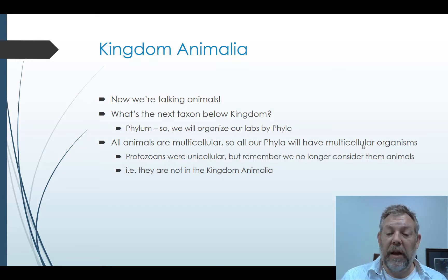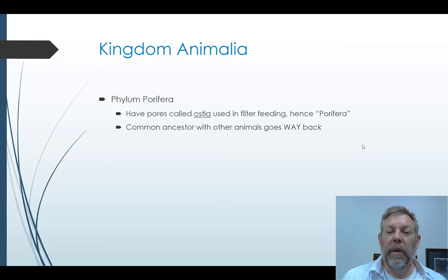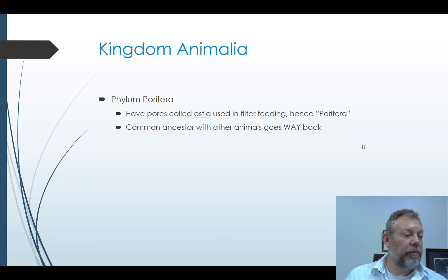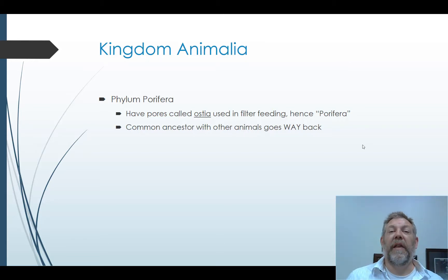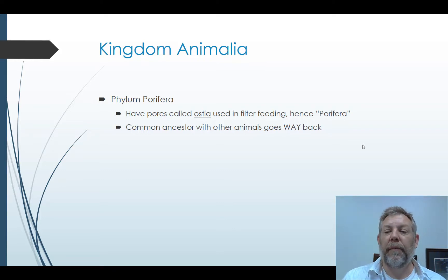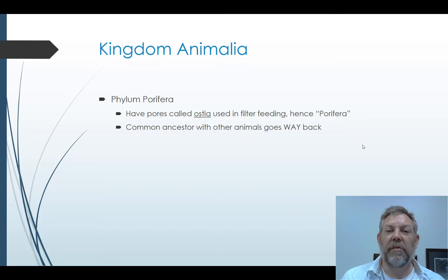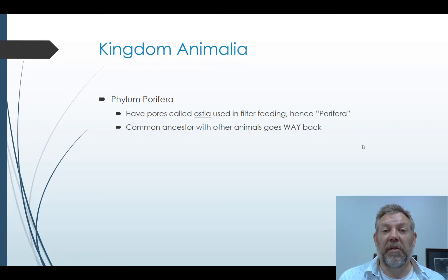Last week's protozoans weren't considered animals. So let's talk about our first phylum, which is the Porifera, or the sponges. These are probably some of the first animals. These are filter feeders, and they have pores called ostia — they suck water in through those pores, and that's where you get the term Porifera. The common ancestor with other animals goes way back; these were probably some of the early organisms we can consider animals.